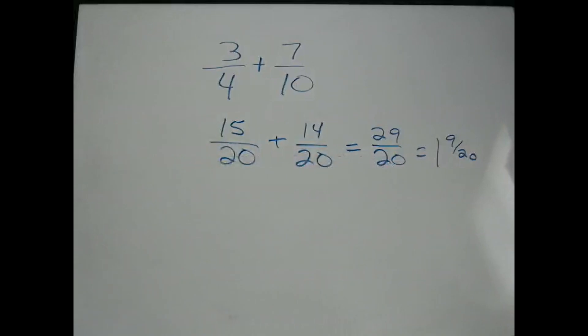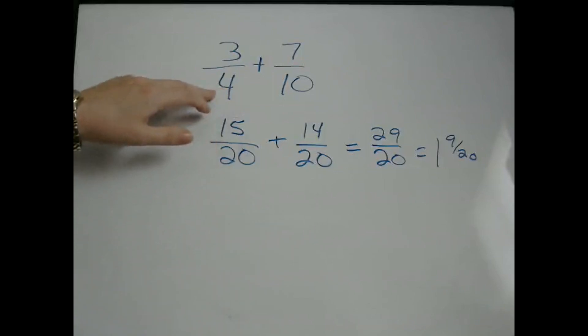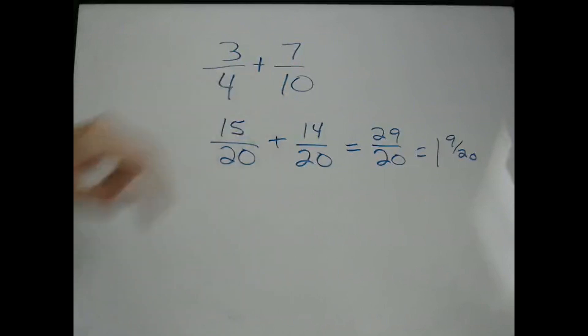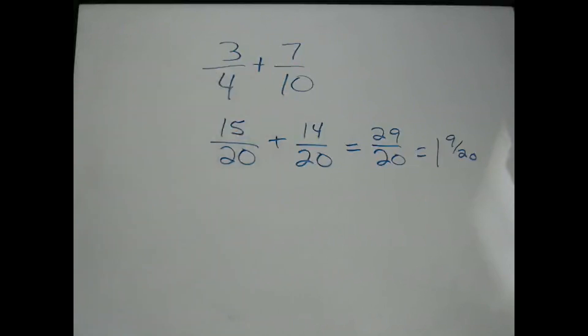Either way is fine to do. Just remember, if you can't figure out immediately what the least common denominator is, just multiply them together — but then you're probably going to have to simplify.